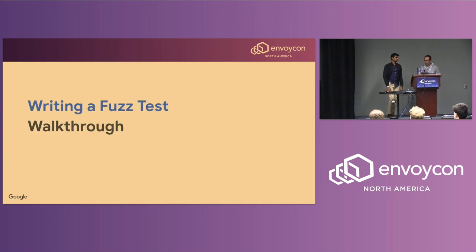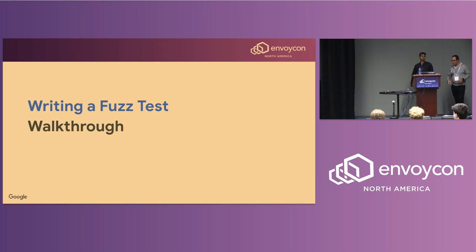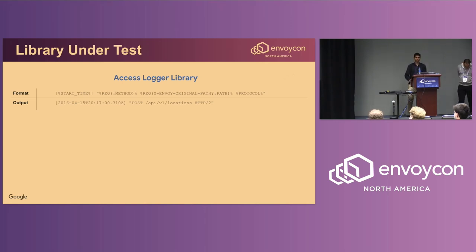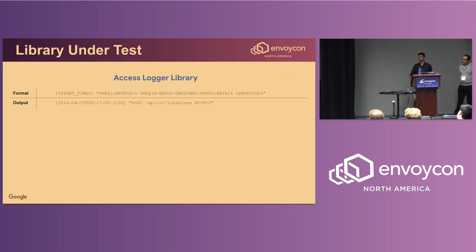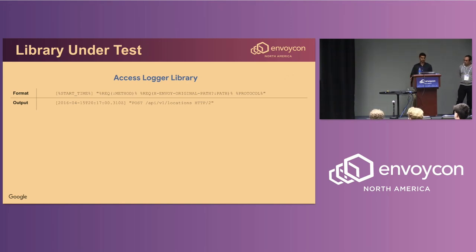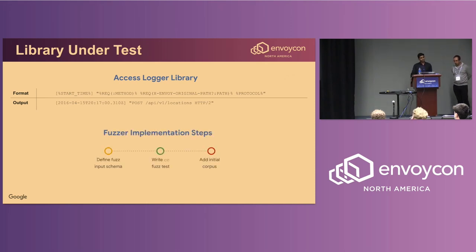Now let's do a concrete walkthrough of writing a fuzz test. We'll use the access logger library as the library under test. This is a great fuzz target because its functionality is split over two components: the config plane and the data plane. In the config plane, the library parses the input access log format string into a list of internal formatters. In the data plane, each formatter runs on every request and response. There are three main steps to create a fuzzer in Envoy: define the fuzz input schema, write the C++ fuzz test, and add the initial corpus.